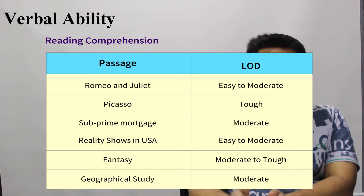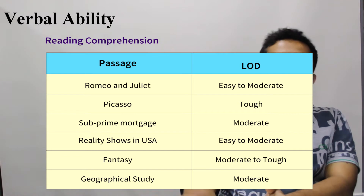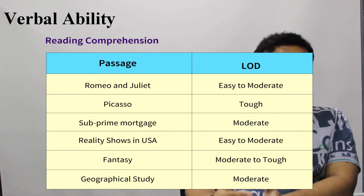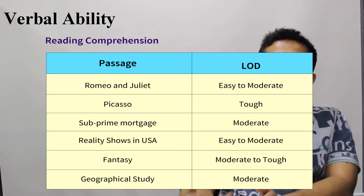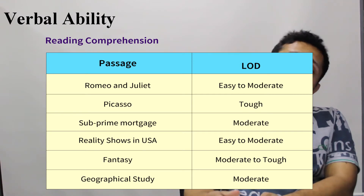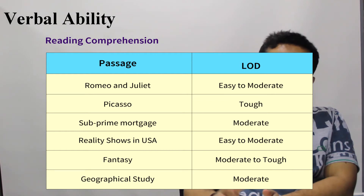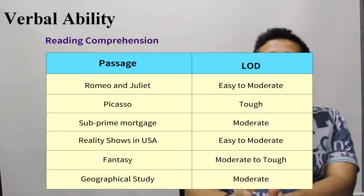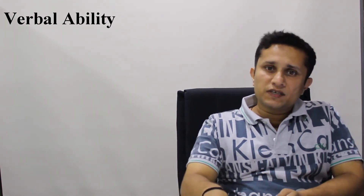Then there were two tough RCs. One was on Pablo Picasso — dealing with his life, his work, and its implications — which would have been tough for everyone except arts graduates familiar with the subject. The other was on fantasy, more specifically Indian fantasy, where the questions were moderate to tough even if the passage made interesting reading. Broadly, there were two RCs tending towards easy, two purely moderate, one between moderate and tough, and one tough.